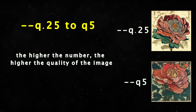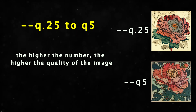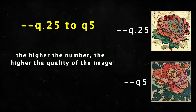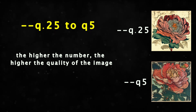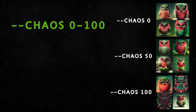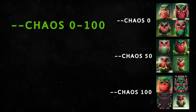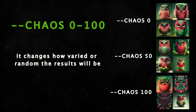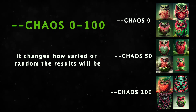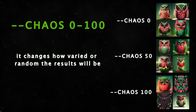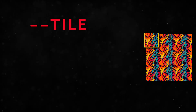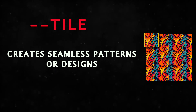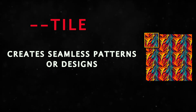Quality ranges from 0.25 all the way up to 5. The higher the number, the higher the quality of the image, and the longer the image will take to produce. Chaos ranges from 0 up to 100 and changes how varied the results will be — higher values produce more unusual and unexpected generations. Tile generates images that can be used as repeating tiles to create seamless patterns for fabrics, wallpapers, and even textures.